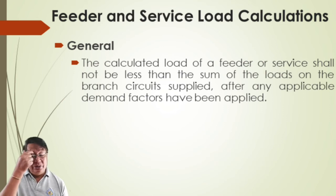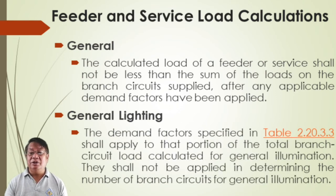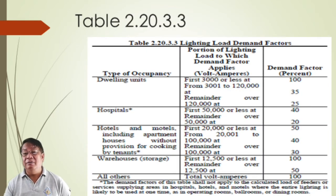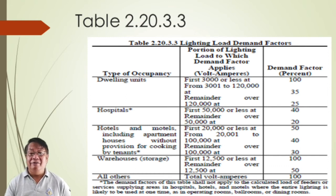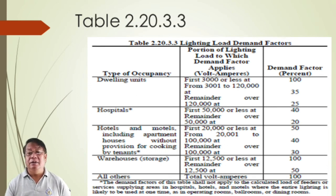For general lighting, demand factors are specified in the table, including illumination. We have lighting load demand factors in Table 2.20.3.3. Apply this in the computation of your feeder or in determining feeder size and the protection of your feeder. Show windows and track lighting calculations also apply here.